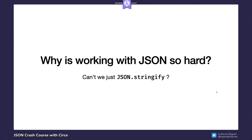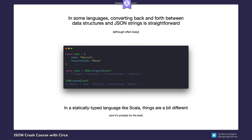Let's see why working with JSON in Scala can be complex. In many languages, specifically dynamically typed languages, transforming back and forth between values and their JSON representations is a straightforward process. Here's for example how it's done in JavaScript. But in Scala, things are a little bit different. The way Circe and most JSON libraries work is a little more involved, but their approach also has great benefits.